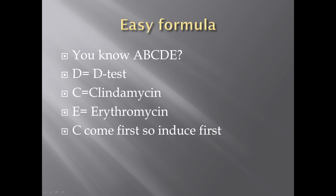D means the D-test. C comes before D in the alphabet — that stands for clindamycin. E stands for erythromycin. Because C comes first, clindamycin is the one that is induced during this test. This means you have erythromycin resistant but clindamycin sensitive, and you want to find out if there is any inducible resistance to clindamycin.